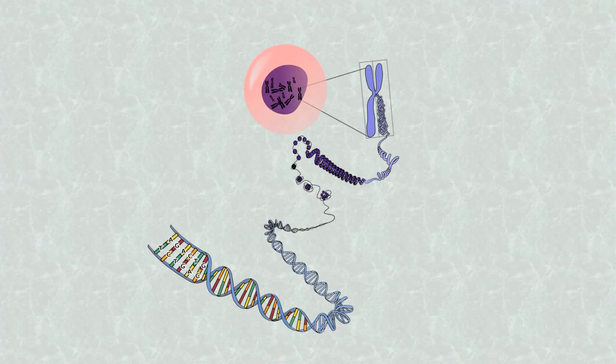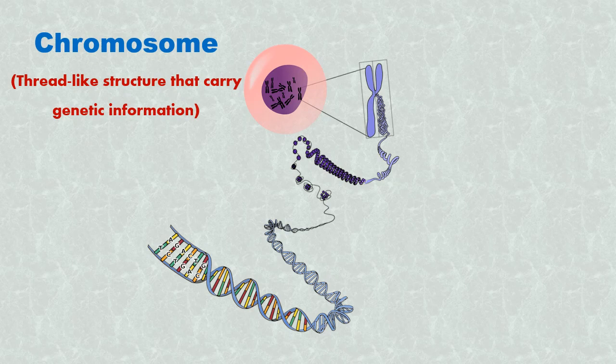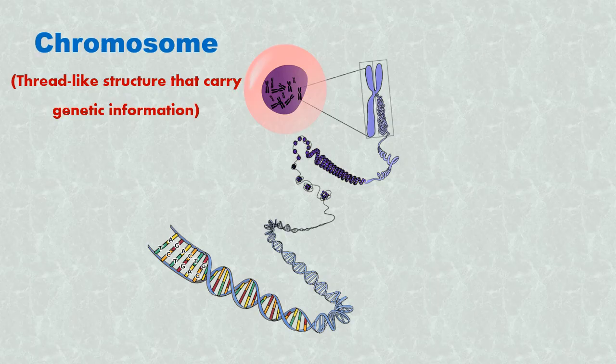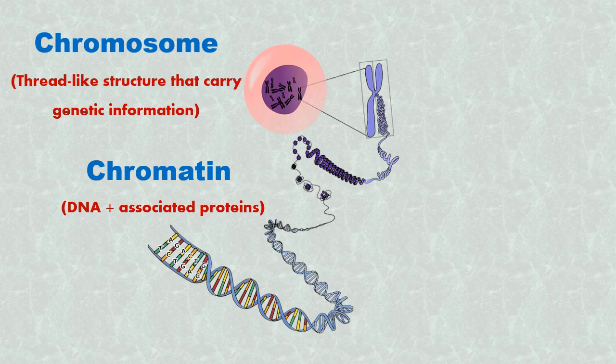So in this video lecture, we understood that chromosome is a thread-like structure in eukaryotes that carry genetic information. This genetic information is in the form of a single, long DNA double helix that is associated with proteins called histones. The complex of DNA and its associated proteins is called chromatin.